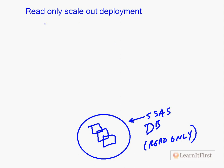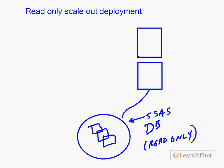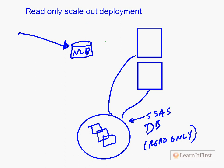In a read-only scale-out deployment, you have your SAN with shared disks containing your SSAS database in a read-only state. You have separate servers — could be many more than two — that have connections into the SAN to work with that database. Then there's a separate network load balancer device that handles redirection: the first client goes to this server, the next to that server, and so on. If you're going to do clustering with Analysis Services it is failover clustering; a read-only scale-out deployment requires a separate network load balancing device.